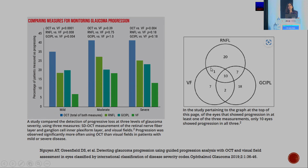However, most studies say that not all investigative technologies will detect progression. You may have progression documented on one or two tests but not on the third. In the study quoted here, almost 64 patients were studied, and they concluded that only 10 of the patients had progression on all three parameters.